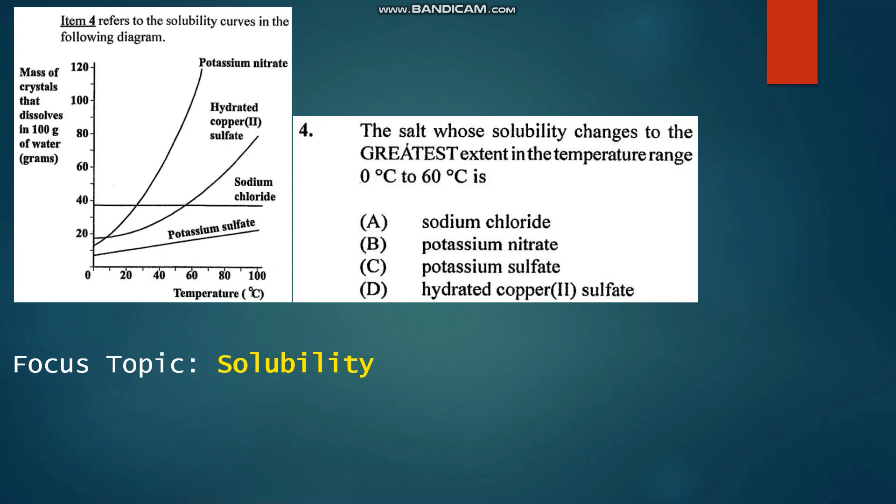Number four refers to the graph here which shows the mass of crystals that dissolve in 100 grams of water, which is basically the solubility of the salt versus temperature in degrees Celsius. The question asks: The salt whose solubility changes to the greatest extent in the temperature range 0 to 60 degrees Celsius is... We can look at the line which has the steepest gradient because that would represent the greatest change. The line for potassium nitrate has the steepest gradient, and therefore our answer would be B.